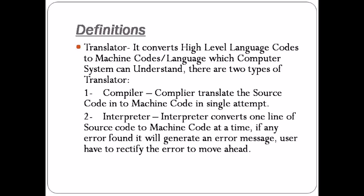In the third and fourth generation, programmers interacted with the computer using high-level languages, which are very close to human language. Since the computer only understands machine language, translators were designed to convert high-level language into machine language. There are two types of translators: the first is a compiler and the second is an interpreter.